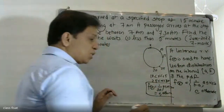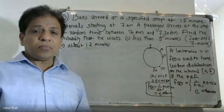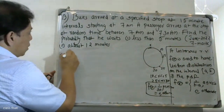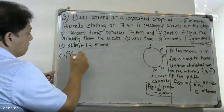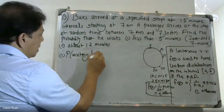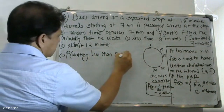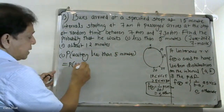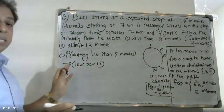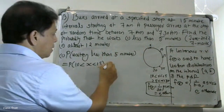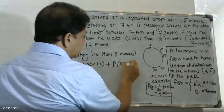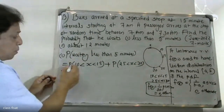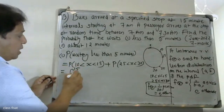Now for question one: the probability of waiting less than five minutes. We set up the integral with the appropriate limits. The probability is calculated as an integral with lower limit 10 and upper limit 15 of the function f(x) equals 1 by 30.